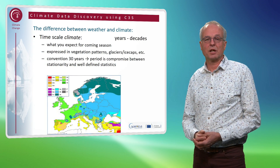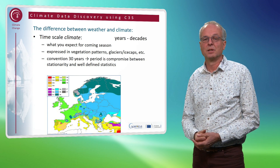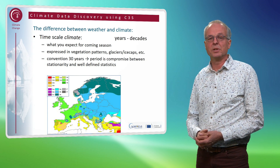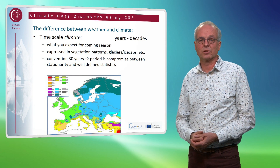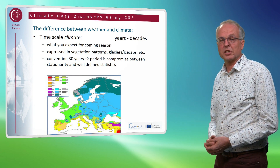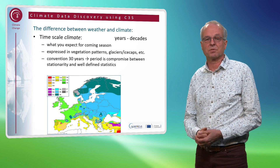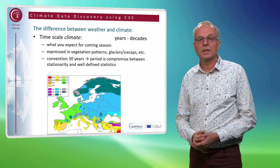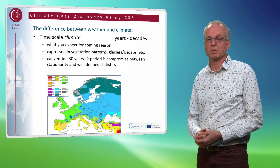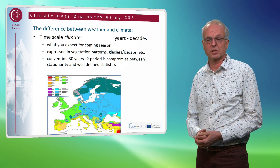The timescale of climate, by contrast, is many years to many decades. It is about the typical difference between a summer and a winter season, or between a dry or rainy season that you normally expect. It is expressed in natural vegetation patterns or the extent of glaciers and ice caps. Therefore, normally we speak about a desert climate or a polar climate, just to name two extremes.